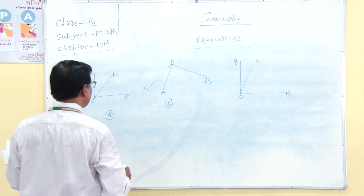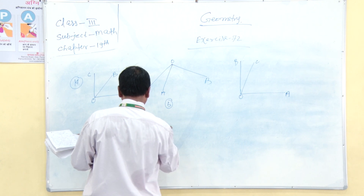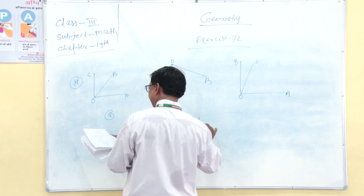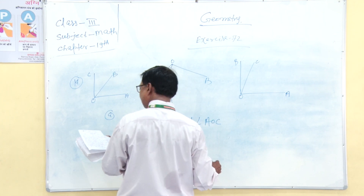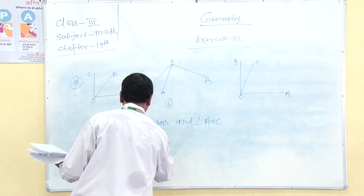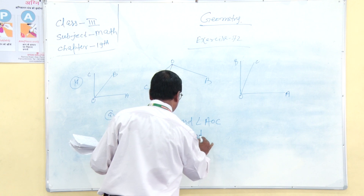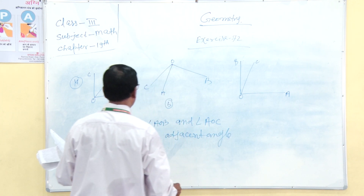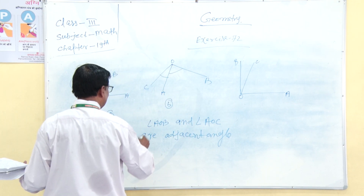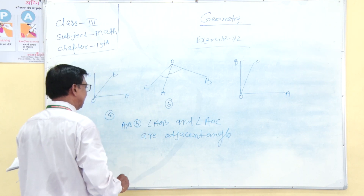This is where it is called A-O-B. A-O-B, A-O-B, and A-O-C. I am working on A-O-B and A-O-C. This is called the angle B of A-O-C.